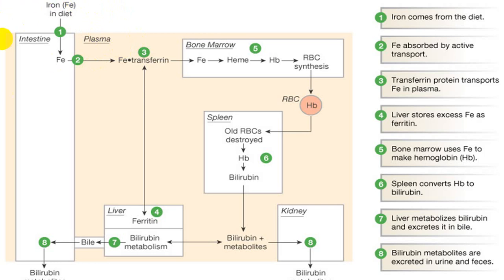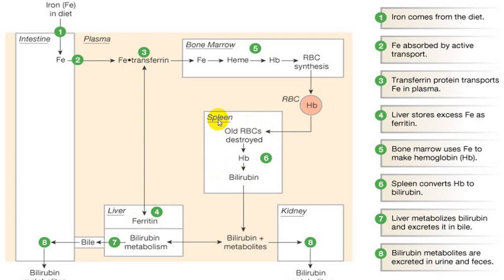Iron taken in the diet is converted from ferric to ferrous form in the stomach, absorbed in the first part of the duodenum with the help of gastroferritin, and transported to bone marrow, where iron is utilized to manufacture heme and hemoglobin — and RBCs appear in the blood. Transferrin also delivers iron to the liver for storage as ferritin. Old RBCs are destroyed by the spleen; after destruction, iron is released from hemoglobin and delivered back to bone marrow.